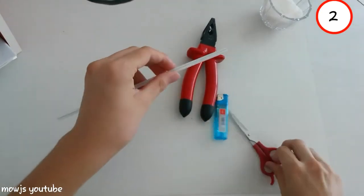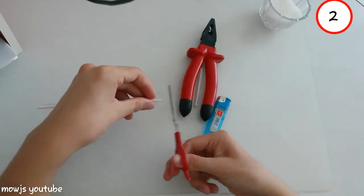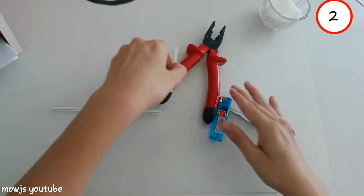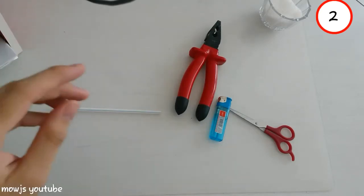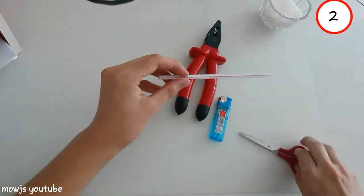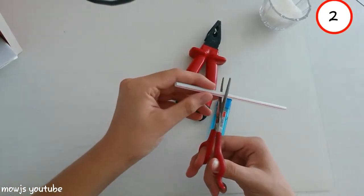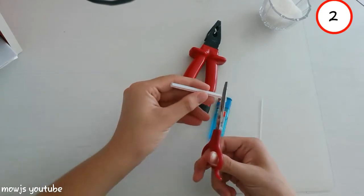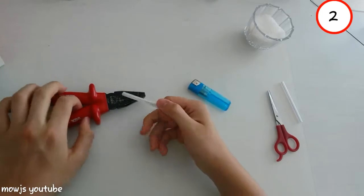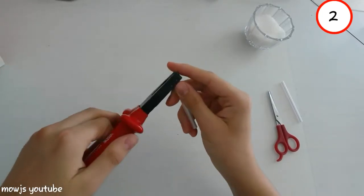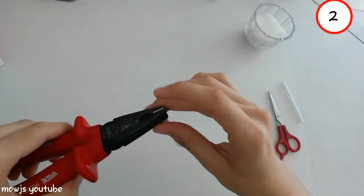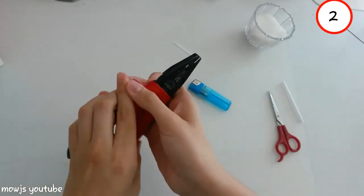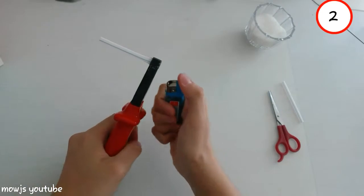We will cut this because we don't need it. And now we will cut. This is enough. And after that, you will take the pliers and take from this side, just leave this small and burn it so it will close.